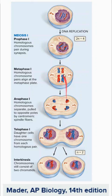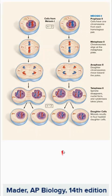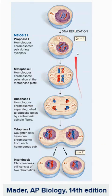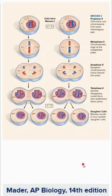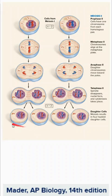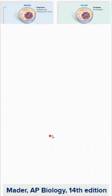In telophase I, two nuclei reform, and instead of cytokinesis we have interkinesis, splitting apart the first round of division. Then meiosis II begins, which is very similar to mitosis. We've already divided the number of chromosomes in half — from four down to two — and now we split the sisters apart. In anaphase and telophase of meiosis II, we end up with haploid daughter cells that are all genetically unique.